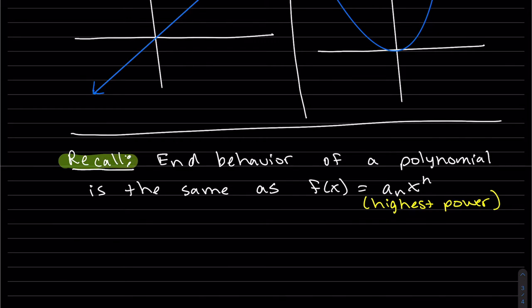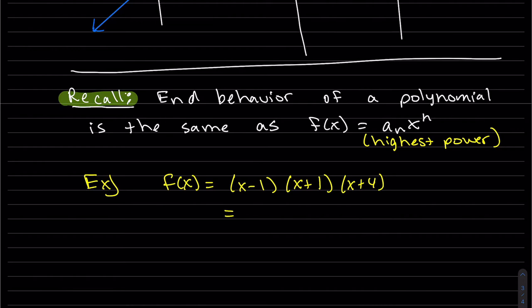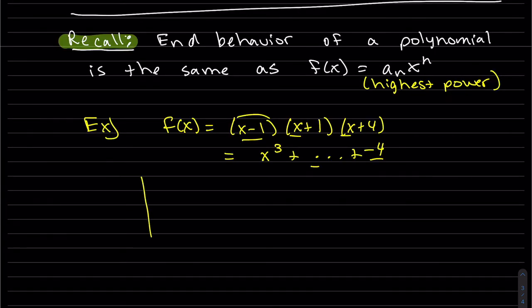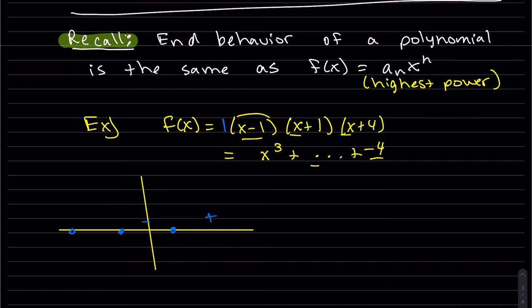The end behavior of a polynomial is the same as its leading term, a·xⁿ — the highest power. For example, if we multiply out a cubic polynomial, we get x³ plus lower terms. We can sketch using its zeros and a sign chart. The leading coefficient is positive.